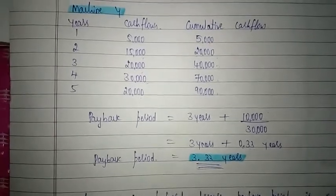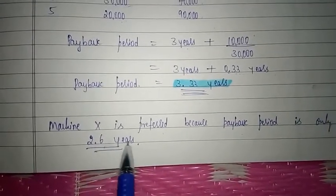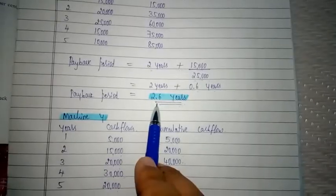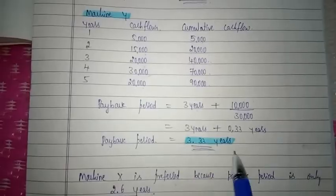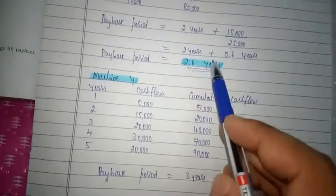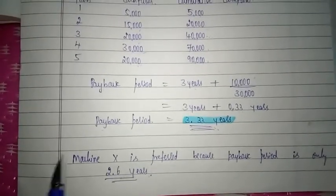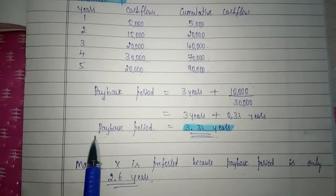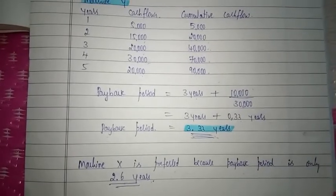Machine X is preferred because the payback period is only 2.6 years. Comparing both machines: machine X has a payback period of 2.6 years, meaning the company can recover 50,000 rupees in 2.6 years. For machine Y, the company has to wait 3.33 years. Therefore, machine X is better because the company can recover the original investment faster — within 2.6 years compared to machine Y's 3.33 years. Thank you, students. This is about the calculation of payback period.